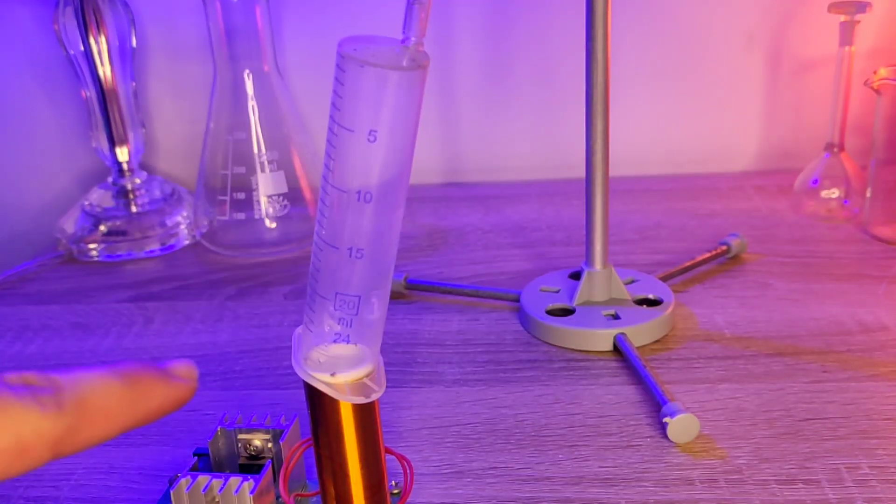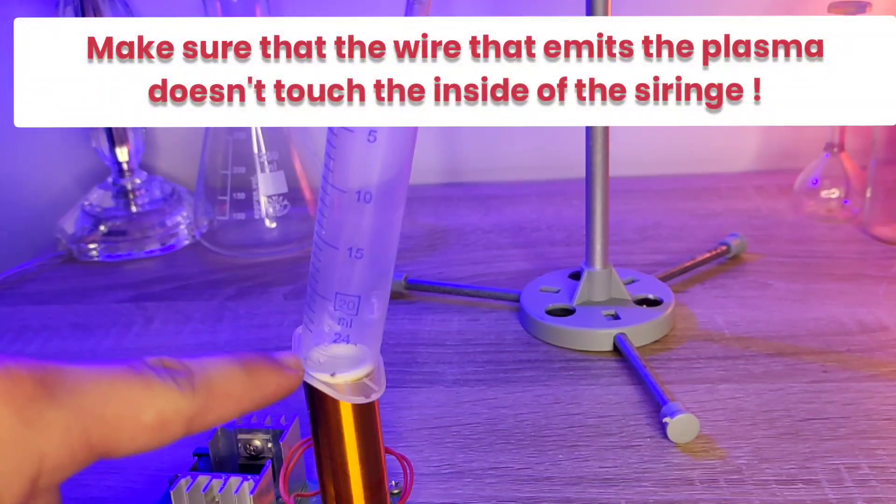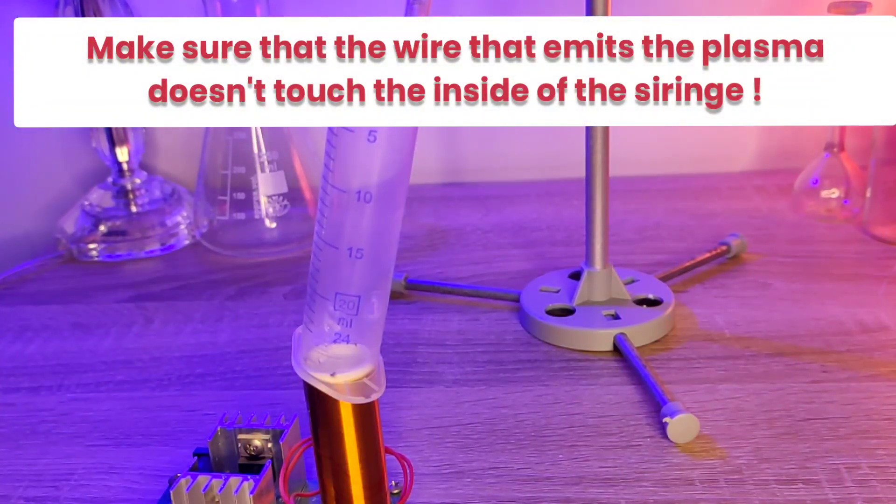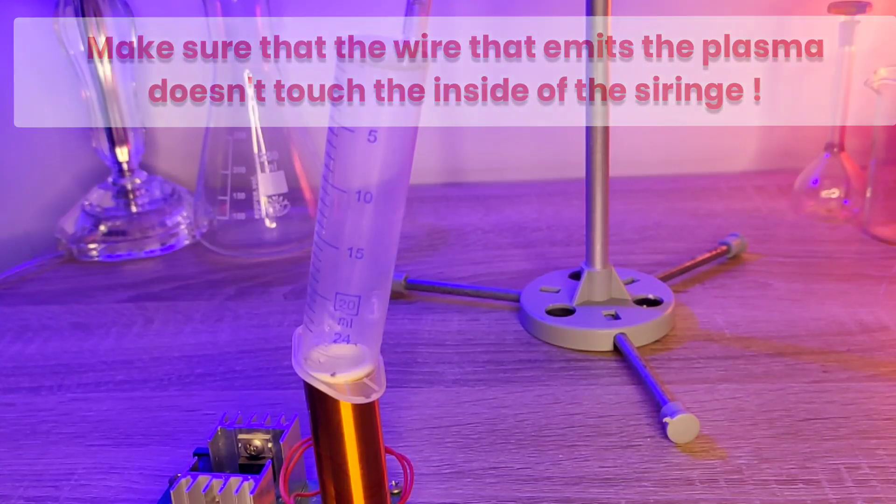And also, just make sure that the pin of the Tesla coil, the wire where it's going to emit the plasma, is not touching the wall of the syringe. Otherwise, it will melt and ruin the experiment. Now, you can see that the plasma has its usual color. But, now I'm going to let the citric acid react with the baking powder, and let's actually see what happens.